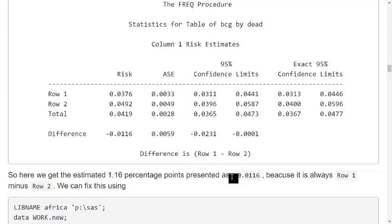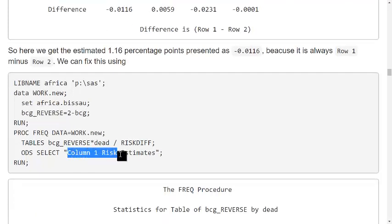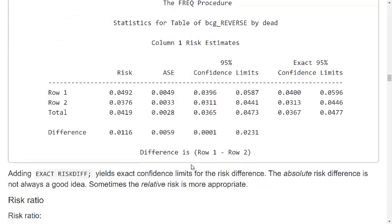If we want to do it in SAS, SAS always gives us row 1 minus row 2, so if we really want the 0.0116 without the minus sign in our SAS output, we have to fix it by reverse scoring. So here I code it in another way, so now I switch around the two rows. When I switch around the two rows and still look at the column 1 risk estimates, I get the same thing and now the difference is 0.0116.